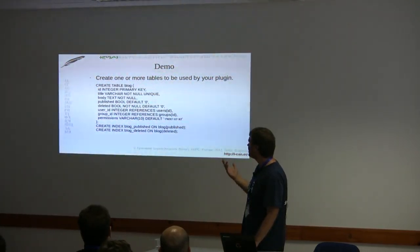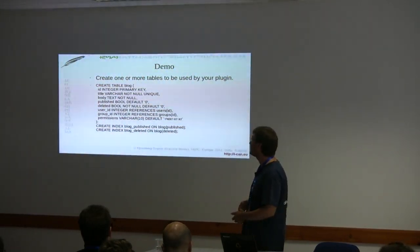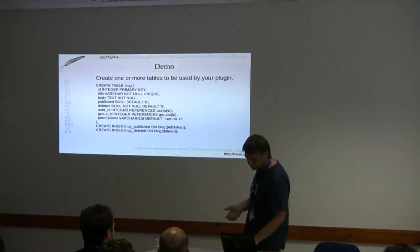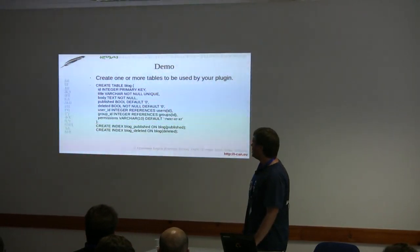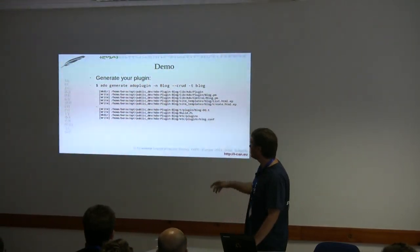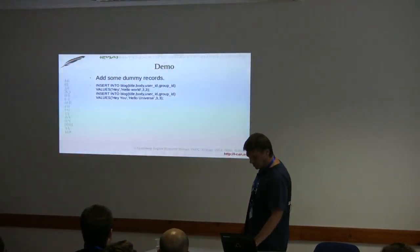To create a plugin, it's good to have a table first. For example, a plugin named 'blog' — you will have a table called 'blog', or of course you can have several tables; your plugin can be as complex as you want. Then just add some dummy records so we can test it. Then we run 'adu generate adu-plugin', name it 'blog' with CRUD — create, read, update, delete — using the table 'blog'.